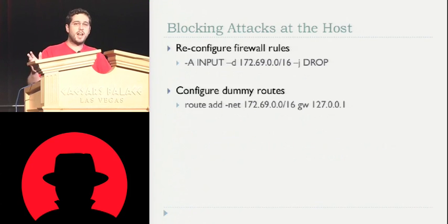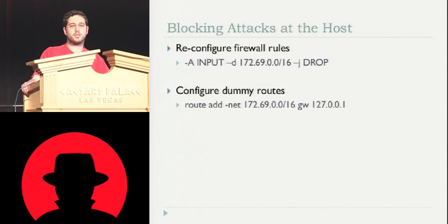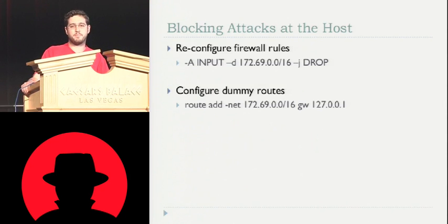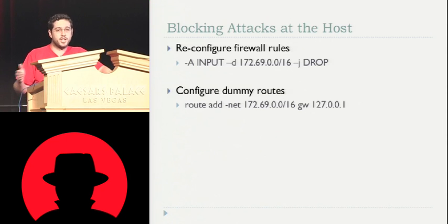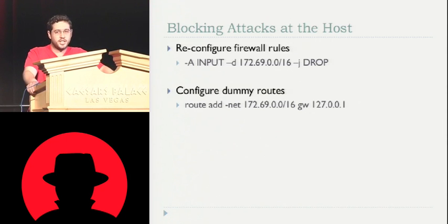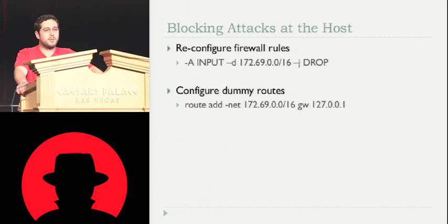Blocking attacks on the host: if you don't have access to your router to make these changes, you can go around to all your internal hosts and put in the same rule — don't allow this host to browse out to the router's public IP. Because I need an internal client to do this attack; if the internal client can't access the router, it breaks the attack. The downside is you have to do this on every single device that connects to your network, including iPads and iPod Touches. You can also configure dummy routes — route everything going to your public IP to loopback, and the connection will never succeed.